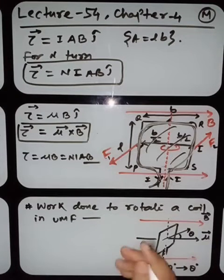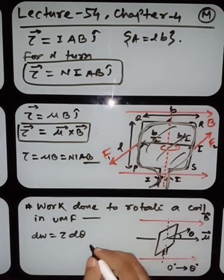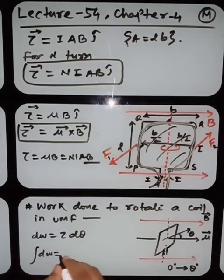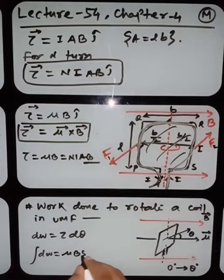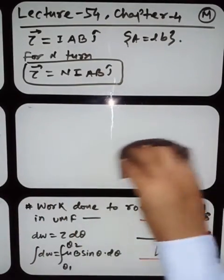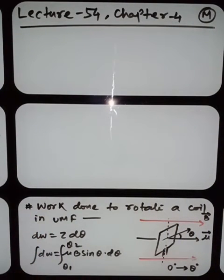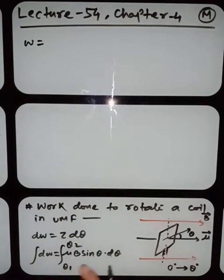We know that work done by the torque is dW = τ dθ (studied in standard 11th). So dW = τ dθ = μB sinθ dθ. Integrating from θ₁ to θ₂, this work done is also considered the potential energy of the coil inside the magnetic field. The change in work done gives the potential energy stored.